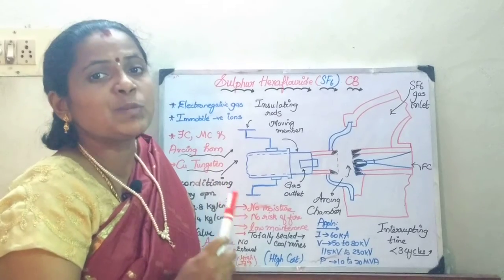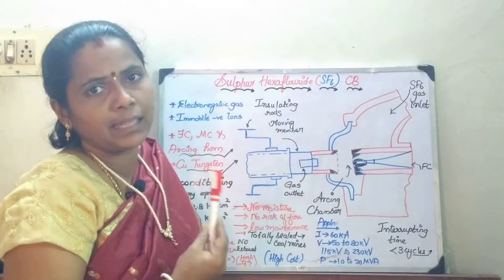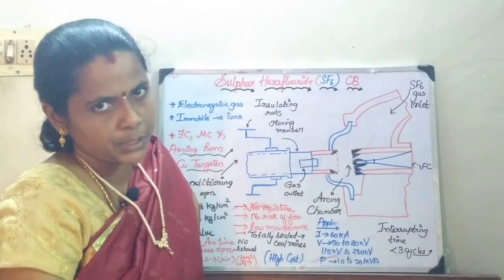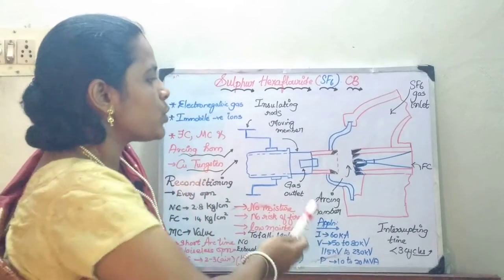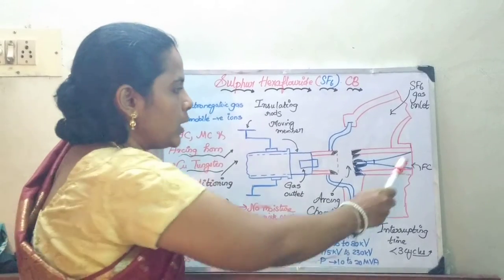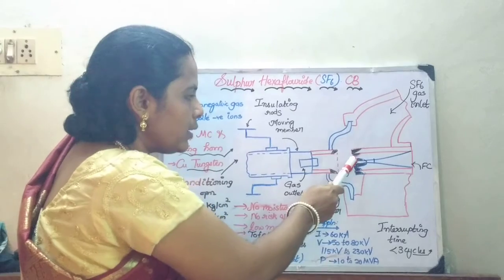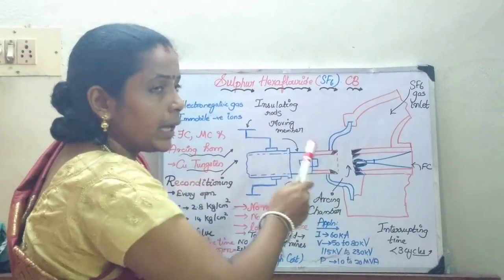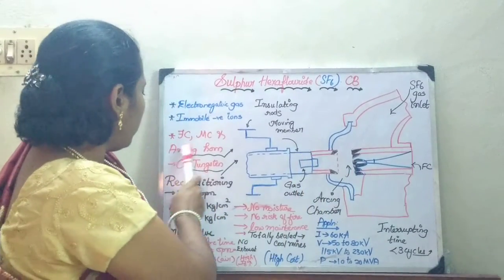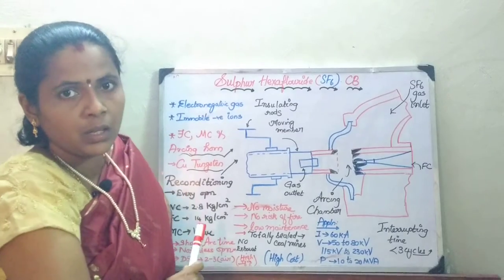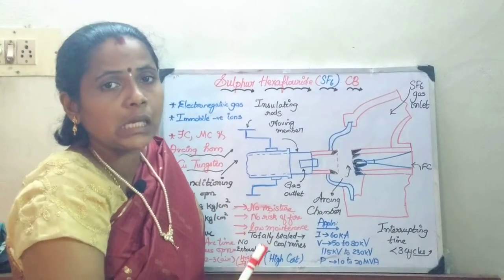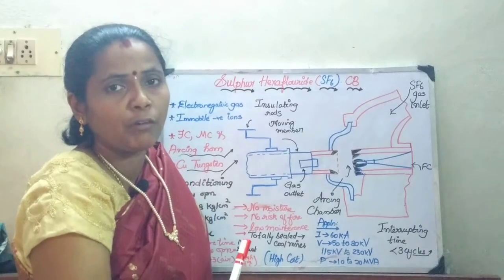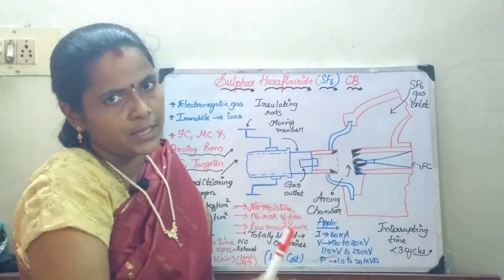The arcing horn is used to split the arcs and thereby extinguish the arc at a faster rate. The two special features are: one is the arcing horn, and another is that the fixed and moving contacts along with the arcing horn are coated with copper tungsten, so that it avoids the easy burning of the fixed and moving contacts whenever a fault is trapped.